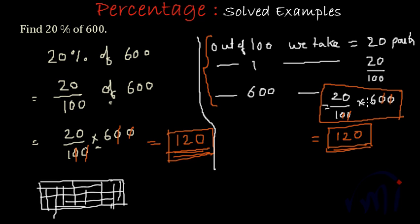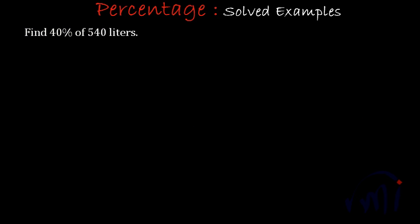So, this is one example. And after this, we are going to take one more example. So, let me erase all this. The next example as you can see is we have to find 40% of 540.